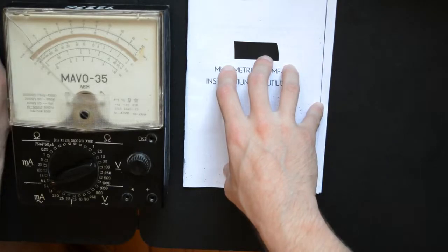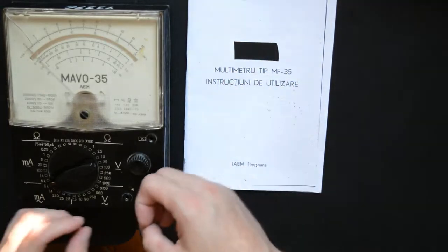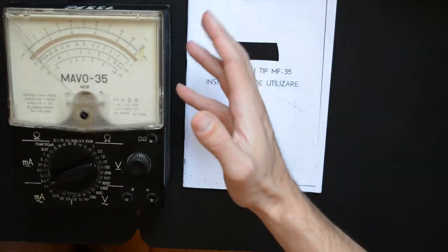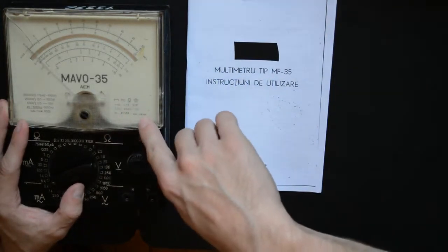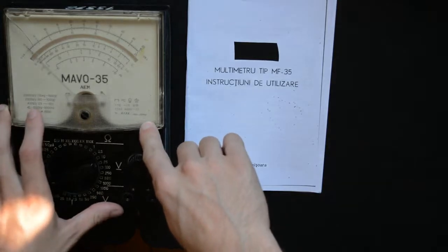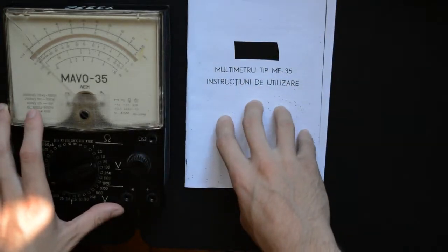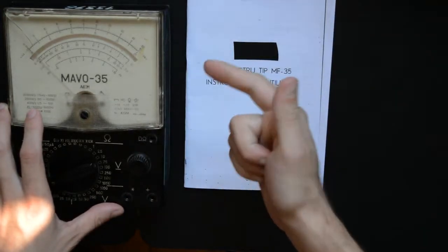So let's see exactly what this machine is. First thing that pops out apart from the enormous size of the thing is the name. It's a MAVO-35 made by IAM back in 1979. From what I could figure out, the name stands for multimeter for amps, volts, and ohms.